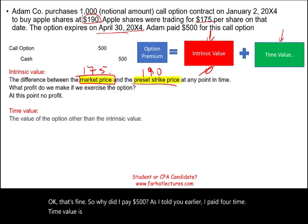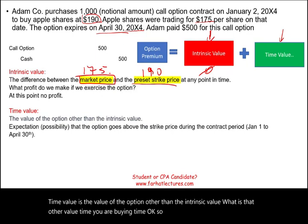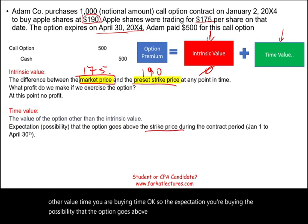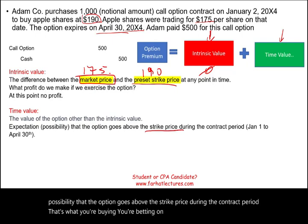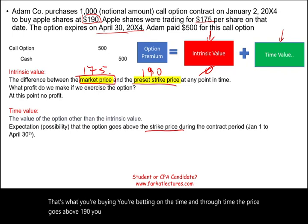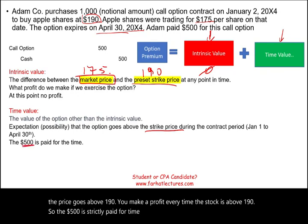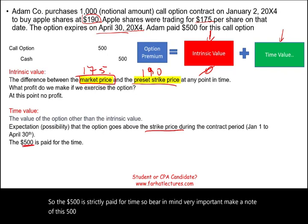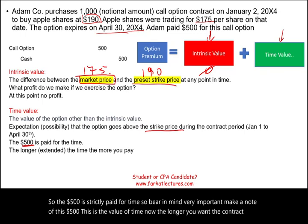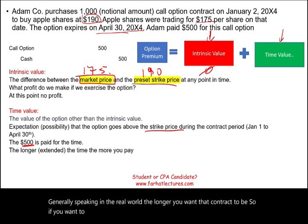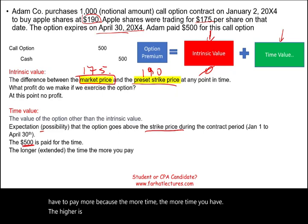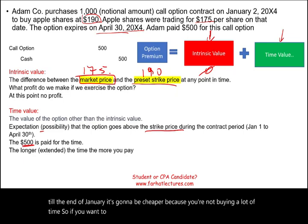So why did I pay $500? I paid for time. Time value is the value of the option other than the intrinsic value — you are buying time. You're buying the possibility that the option goes above the strike price during the contract period. You're betting on time, and through time, if the price goes above $190, you make a profit. So the $500 is strictly paid for time. Generally speaking, the longer you want the contract to be, the higher the price of the option. If you want the option to extend till end of June, you have to pay more. If you want to buy an option till the end of January, it's going to be cheaper because you're not buying as much time.